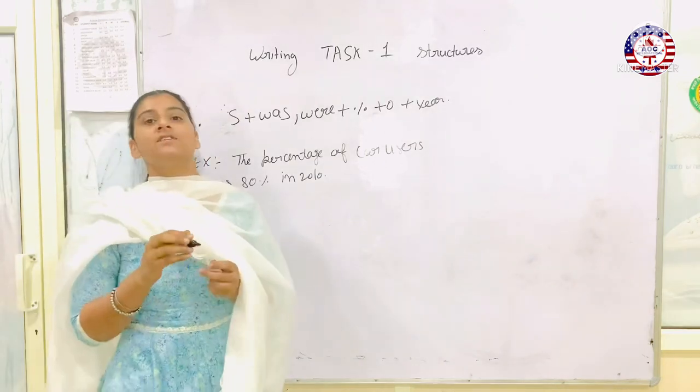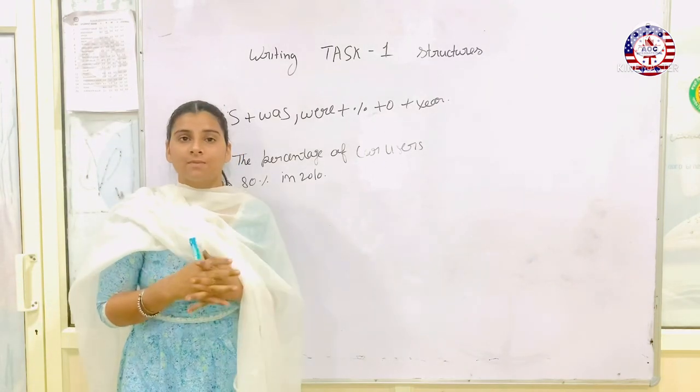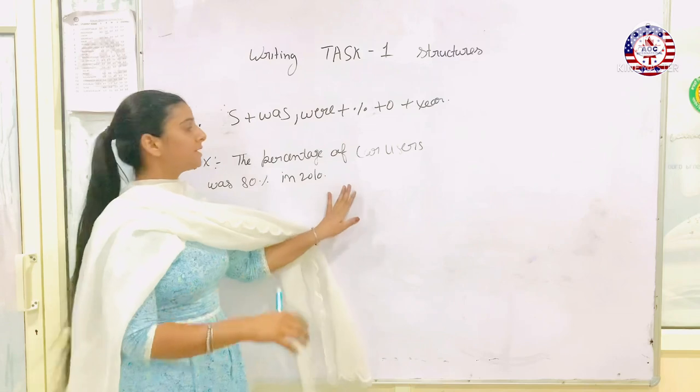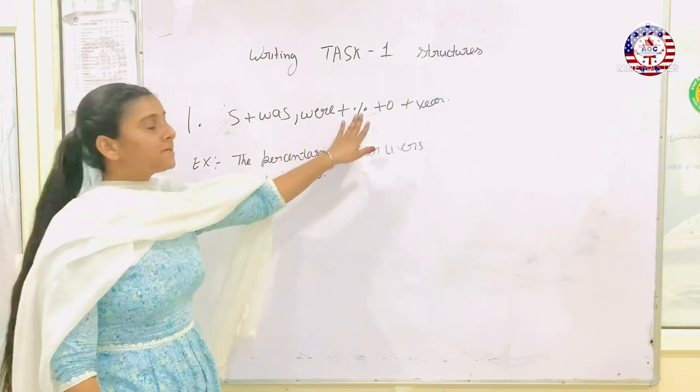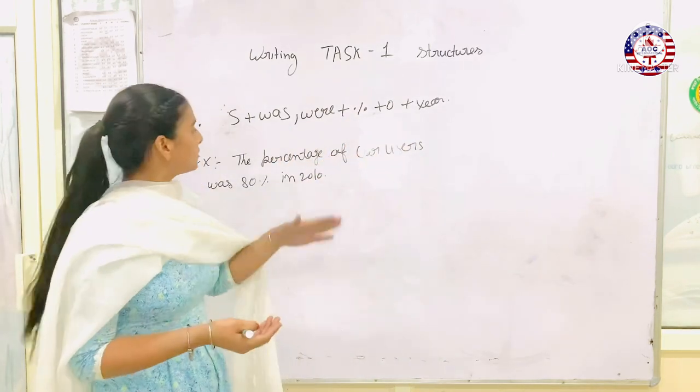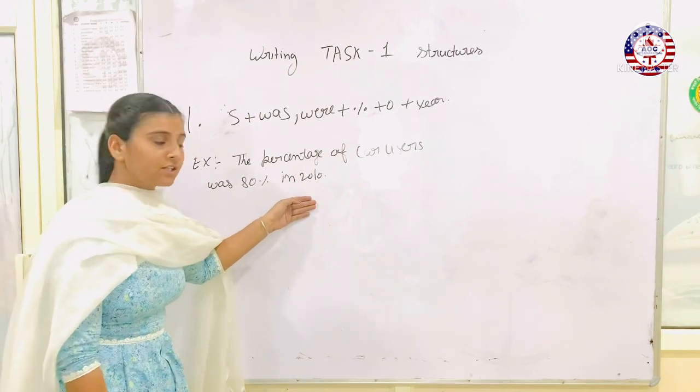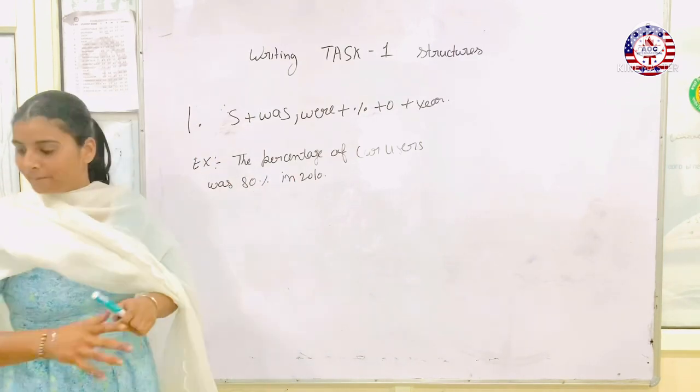If you have any Task 1 which is a variation, then you can use simple sentences with percentage and year. This option includes year, and you mention the percentage first.